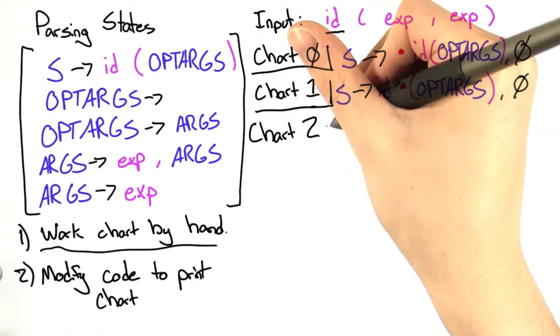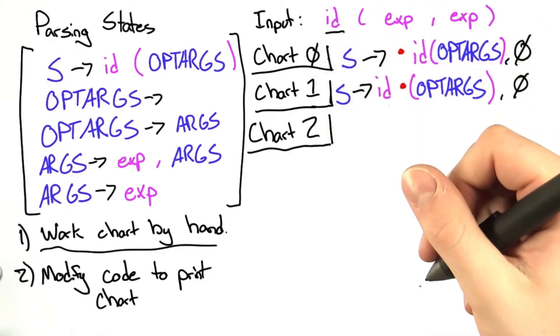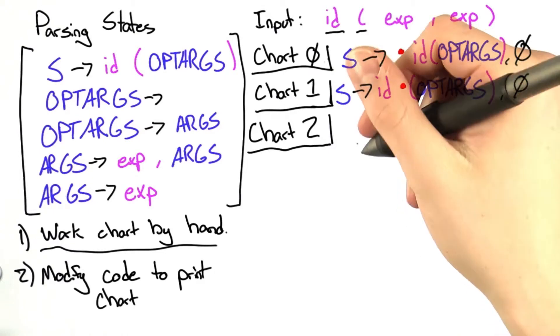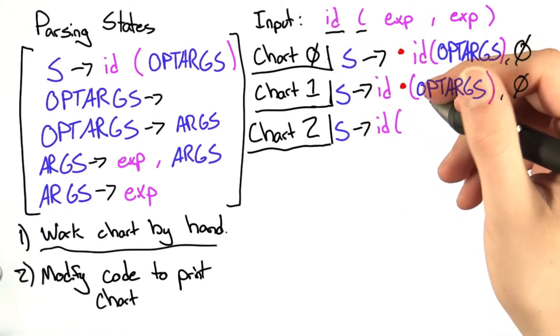Now the moment of truth, chart 2. Let's see what we can do. We're going to see the token, that's the left parentheses, and we're going to shift. Here there's two things that are possible.